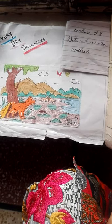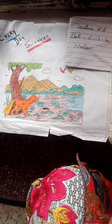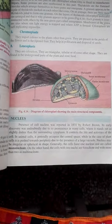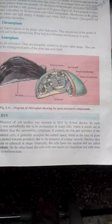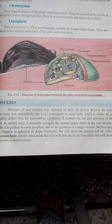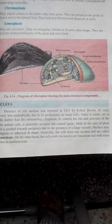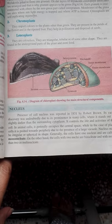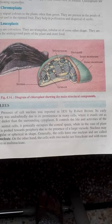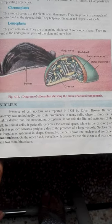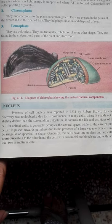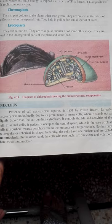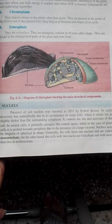Assalamualaikum students. Today is the 15th of December and the topic which we have to discuss during today's lecture is the Nucleus. The Nucleus was reported in 1831 by Robert Brown. His early discovery was undoubtedly due to its prominence in many cells where it stands out as slightly darker than the surrounding cytoplasm.